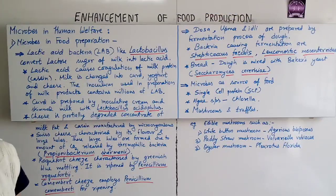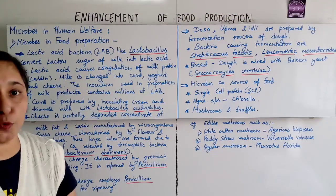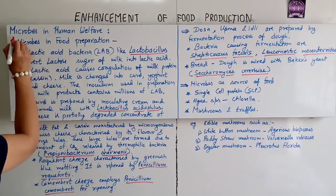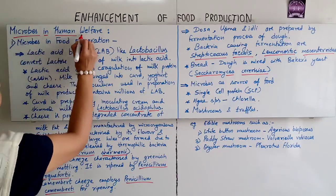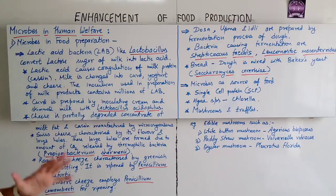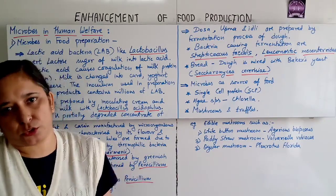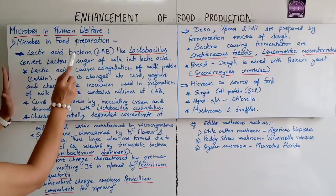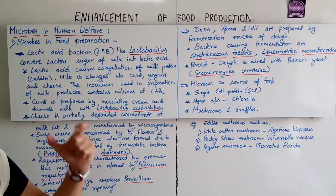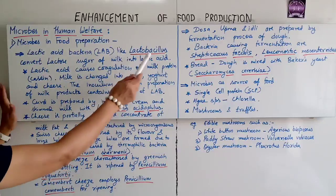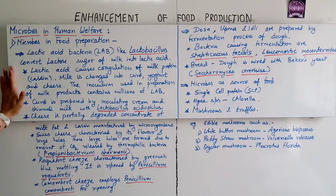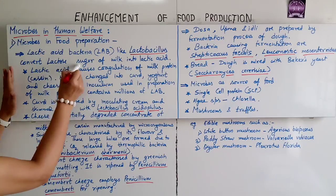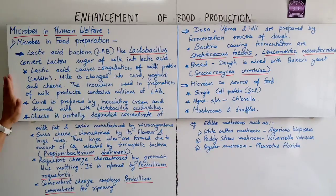Now the next topic is microbes in human welfare. The first subtopic is microbes in food production, regarding dairy products. Lactic acid bacteria, or LAB — like Lactobacillus — convert the lactose sugar of milk into lactic acid.